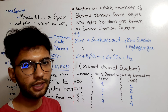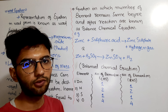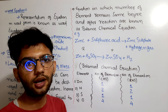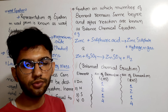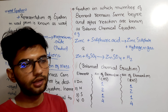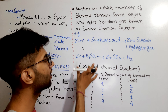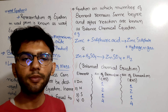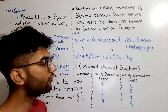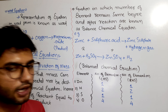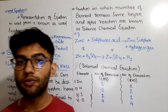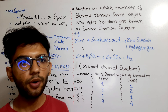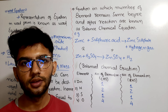So that equation is known as a balanced chemical equation. Balanced means the number of atoms of each element is equal on both sides. If the atom count is equal on both sides, the equation is balanced. If an equation is not balanced, what should we do? We will discuss that in our next class.